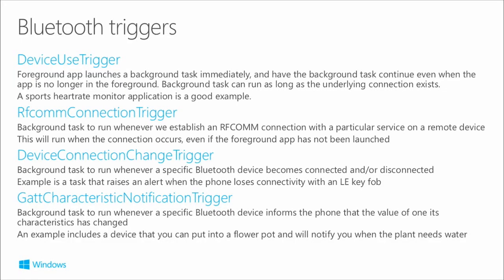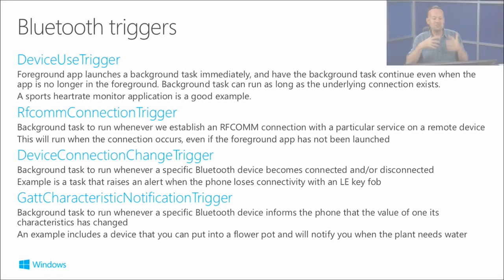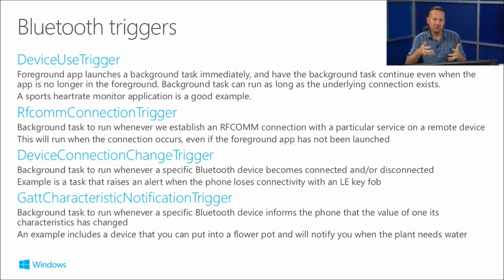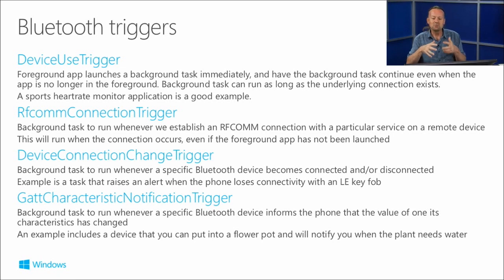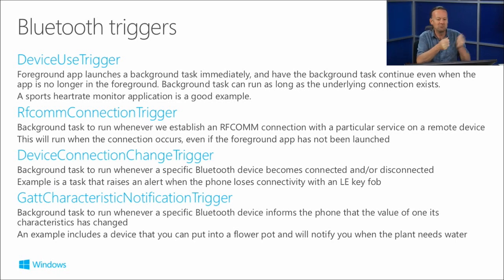We've got four triggers. Device use trigger - the top two are for long-running things. The basic idea with the device use trigger is your foreground app launches this background task immediately, and that background task is maintaining the connection with the device. This is for servicing the device - you could use it for doing firmware updates. The background task will continue even after the foreground app has been suspended, finish its work, and it can have up to about ten minutes to service that device. This is a foreground-initiated background task.